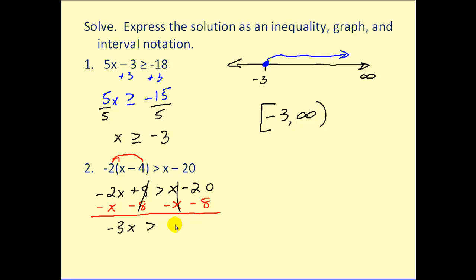Now we'll divide by negative three. However, remember when you divide by a negative, we do have to reverse the inequality symbol. So we're going to have x is less than 28 thirds.